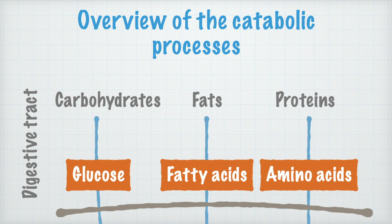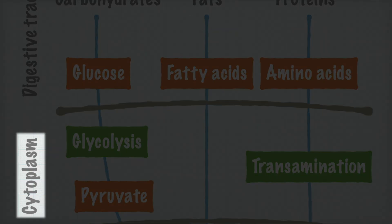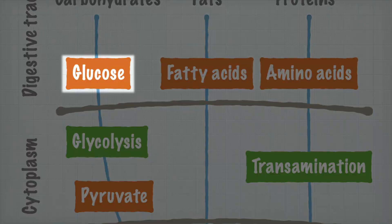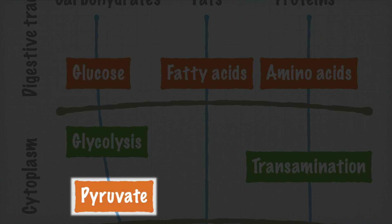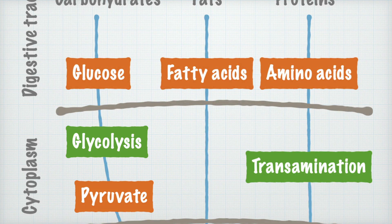Everything is transported across the cellular membrane and into the cells in the body. Now we're in the cytoplasm, and here two interesting types of reactions take place, at least from a catabolic point of view. The first one is that every glucose molecule is cleaved into two molecules, or ions actually, called pyruvate. This is a process called glycolysis. This is just an overview, and in the following videos I'll explain everything.